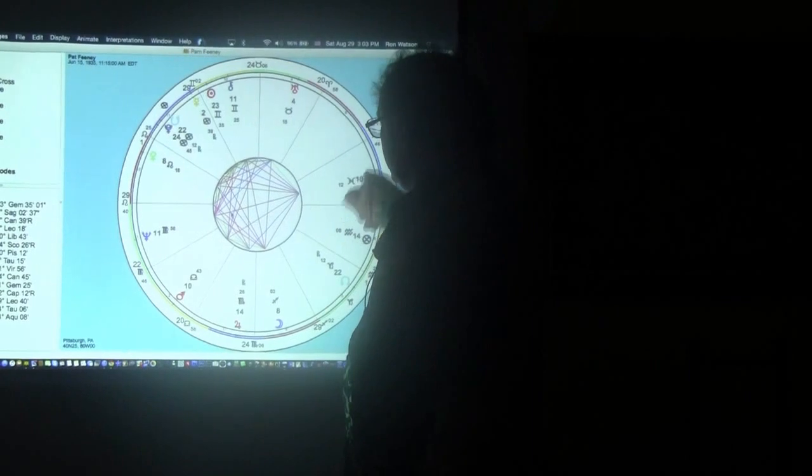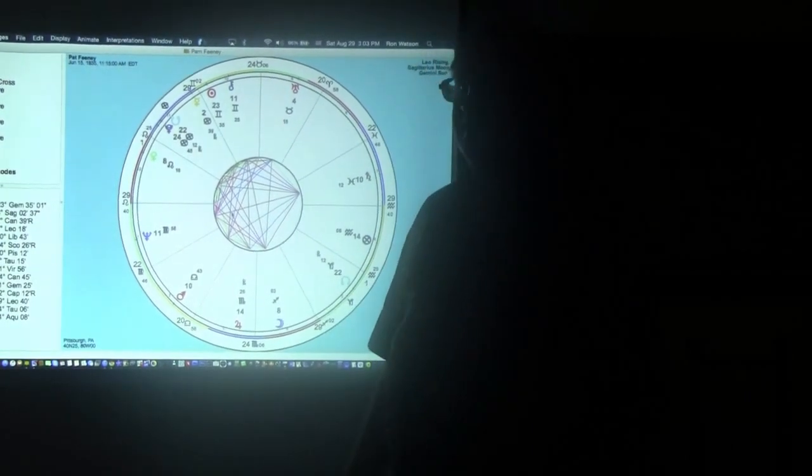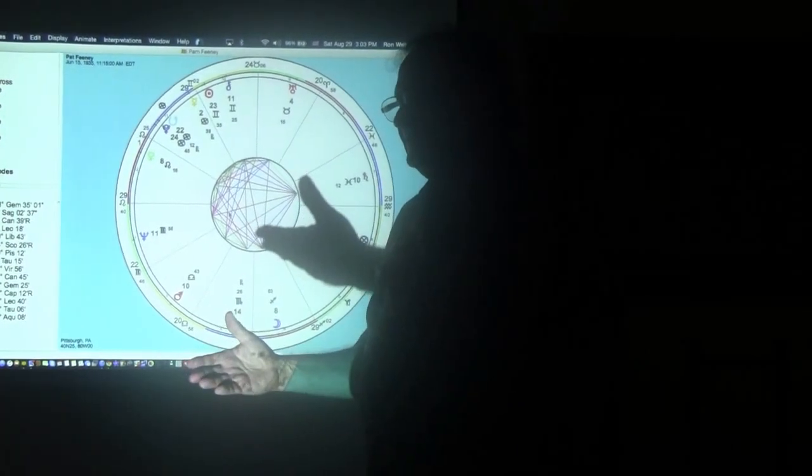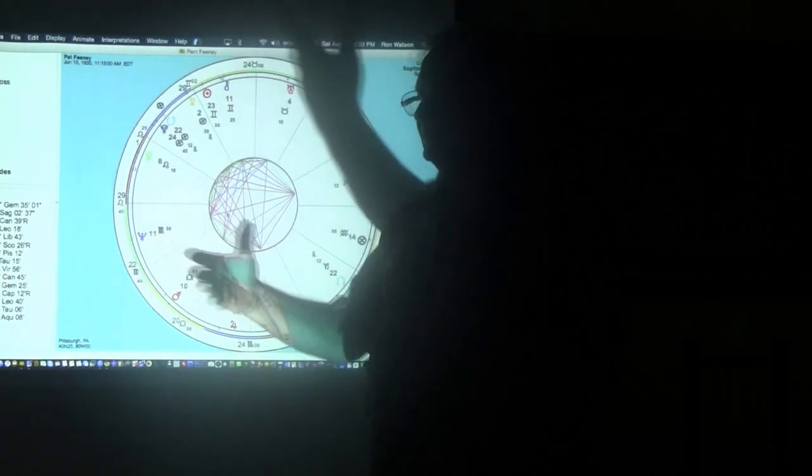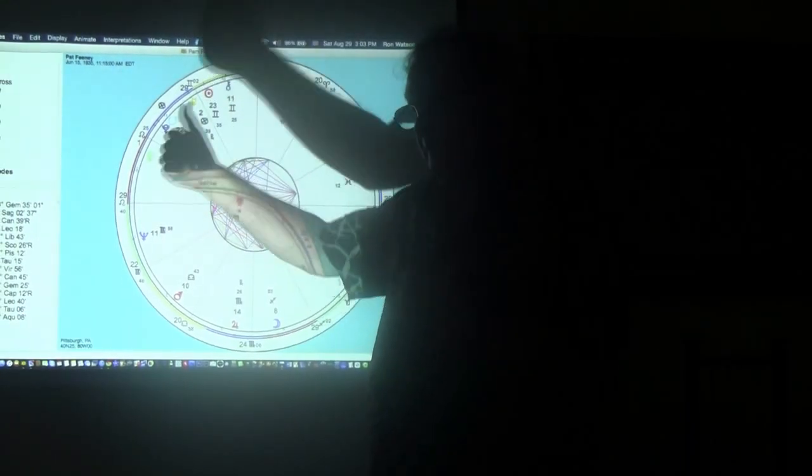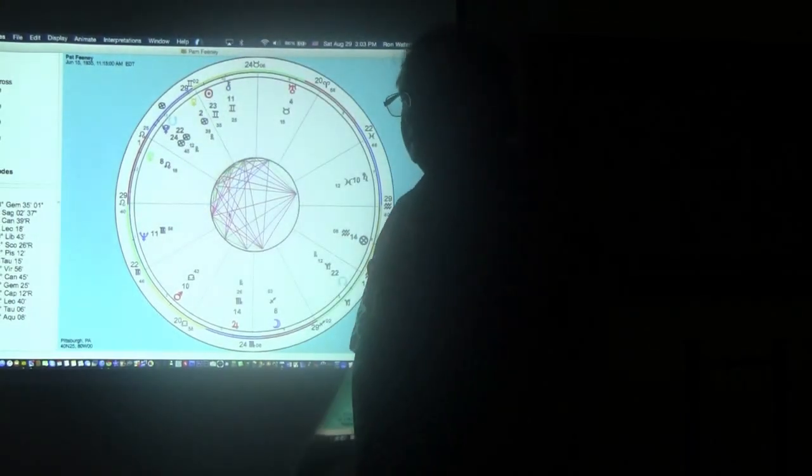Husband, moon. See, also whenever I see moon Saturn, I usually think of parents. But it also represents you and your mate, your husband, and especially in the seventh house.